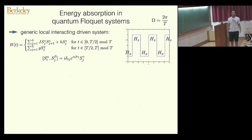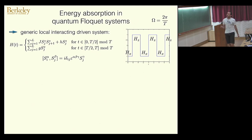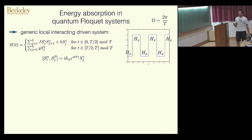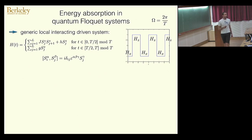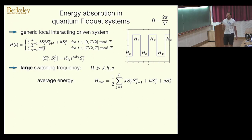This model has been studied by many people. It's a spin-one-half system, and I want to associate a frequency of switching, which is just 2π over the driving period. Even though this drive has multiple harmonics — essentially infinitely many — my frequency here is the frequency of switching.